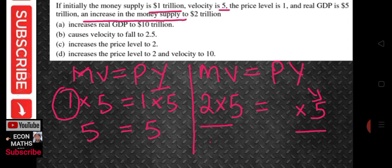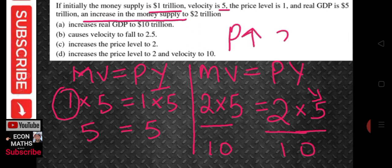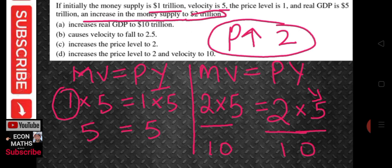We are left with P. We have 2 times 5 which is 10 on the left side. What do we multiply by 5 to make it 10? We multiply by 2 — that means 2 times 5 is 10. So the price level should go up to 2. That means option C is correct.